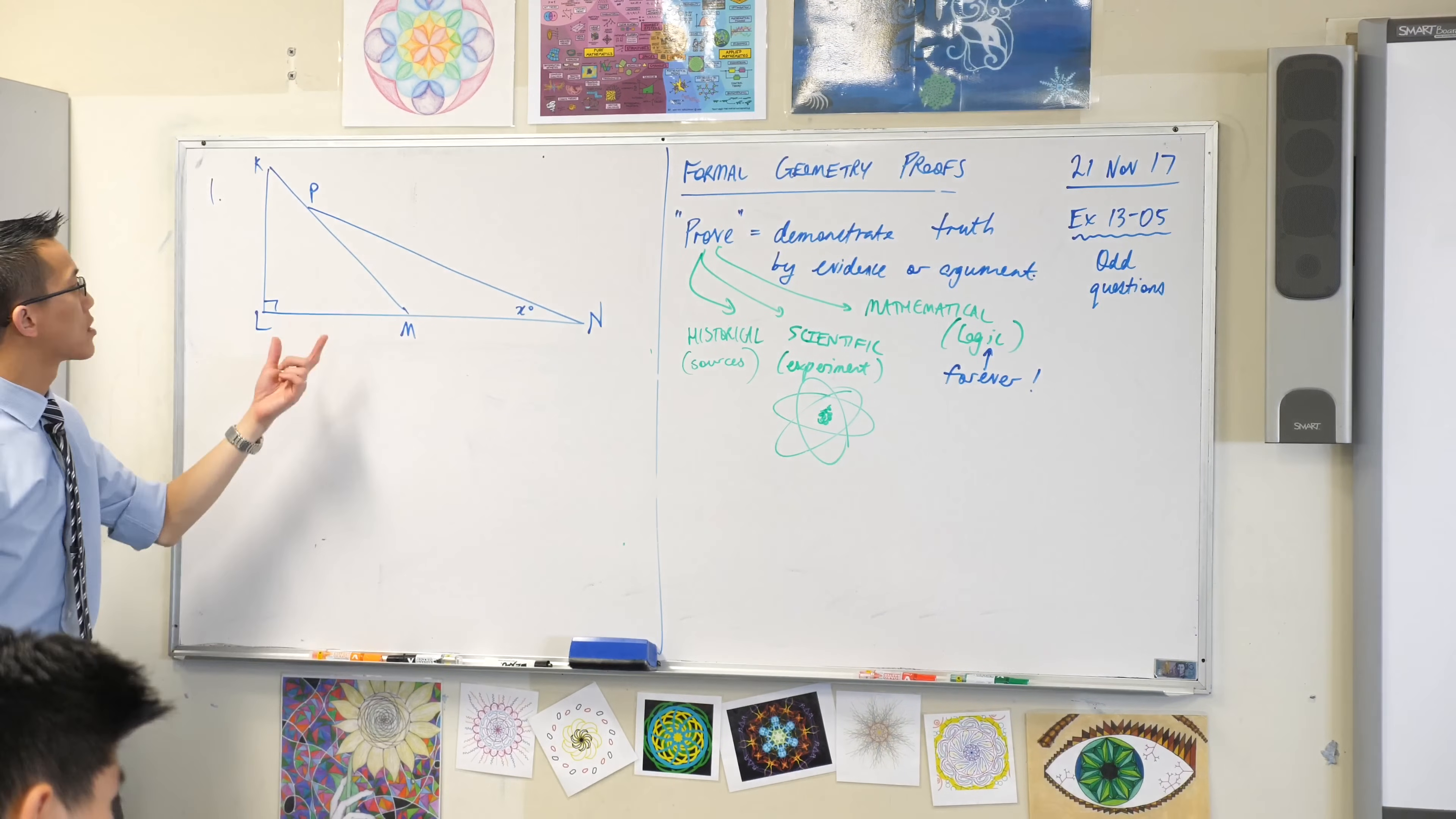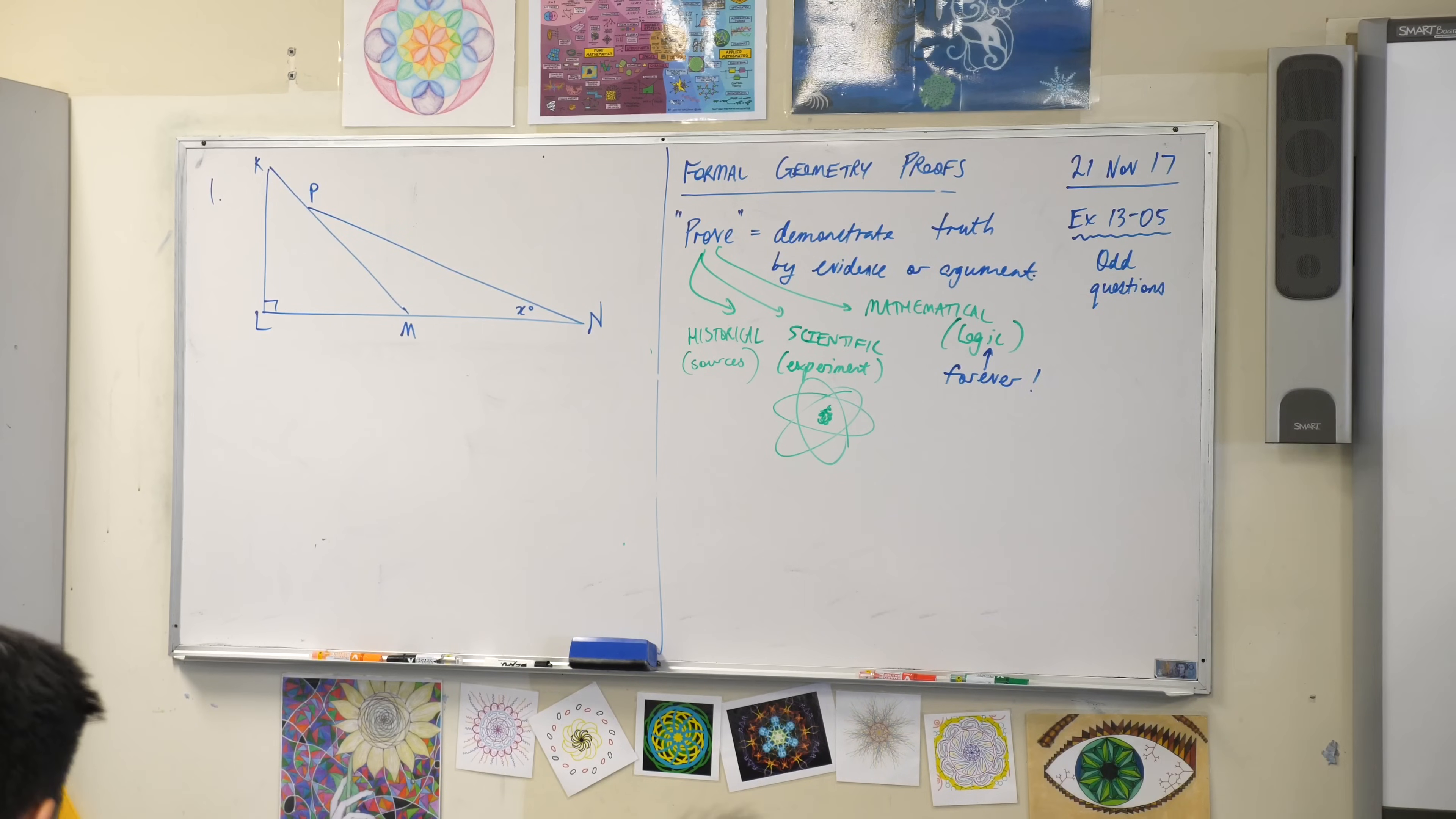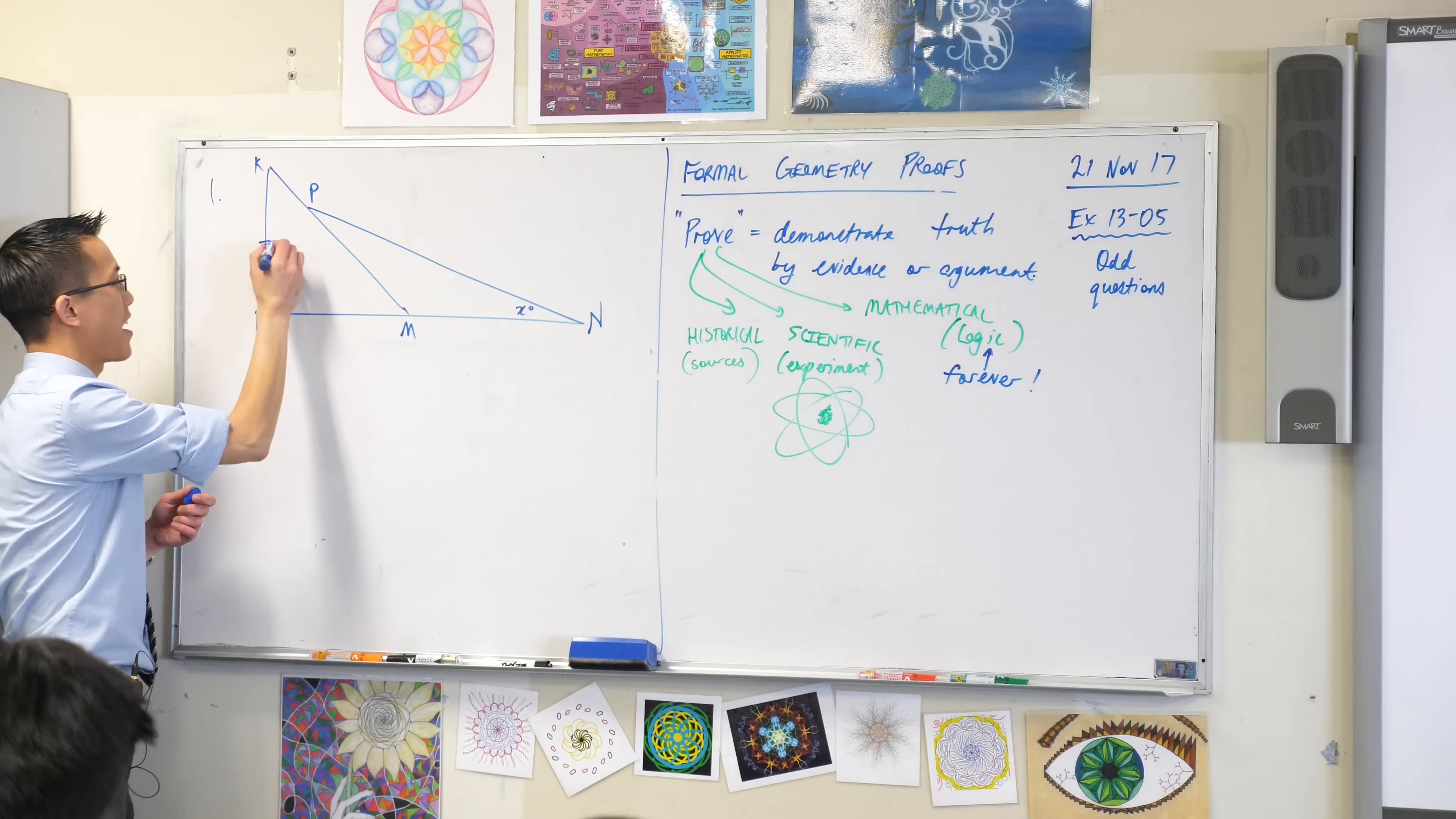Read the question with me because I don't have all the information on my diagram that's on theirs. It starts off by saying KL equals ML. So have a look at where I've labeled everything. Where's KL? It's this vertical side.